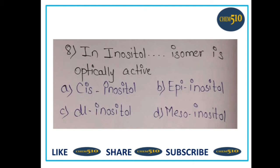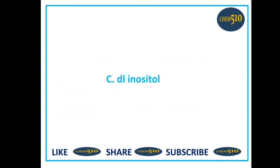Question eight: in inositol, which isomer is optically active? a) cis-inositol, b) epi-inositol, c) dl-inositol, or d) meso-inositol. Inositol has 8 isomers, similar to hexachlorocyclohexane. Among these, the dl-isomer is optically active, so option C is correct, which is dl-inositol.